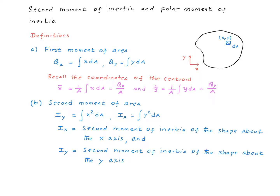Within the same framework, the second moment of area is defined like this. Iy is defined as the integral of x squared times dA, whereas Qx is defined as the integral of x times dA. So that's the difference between the first moment of area and the second moment of area. And similarly, Ix is defined as the integral of y squared times dA. It turns out the second moment of area is what we call in mechanics the second moment of inertia of the shape about the x-axis.